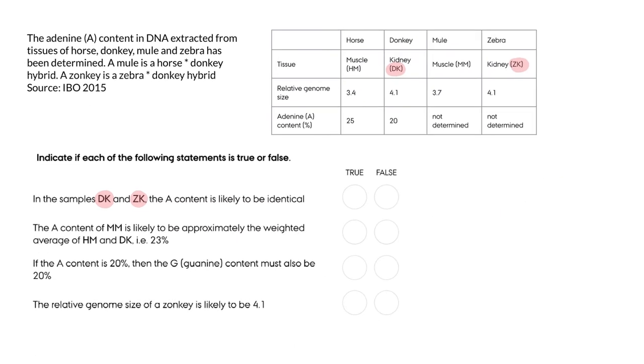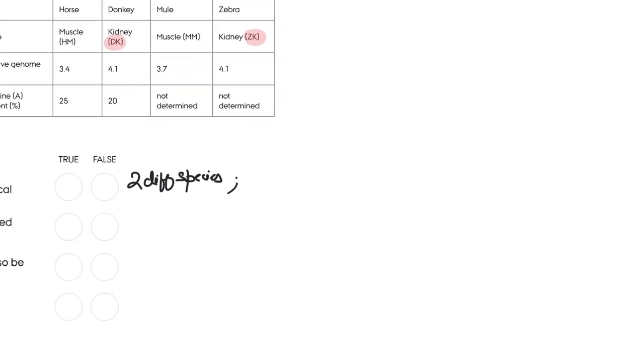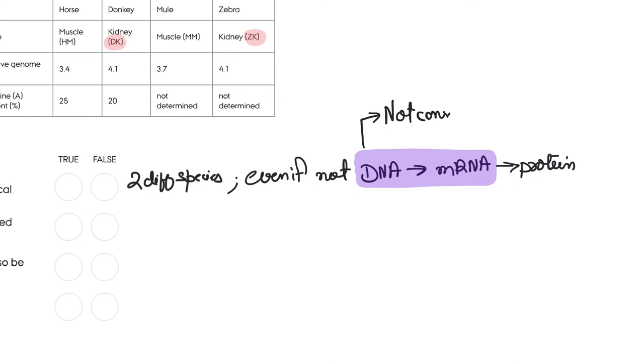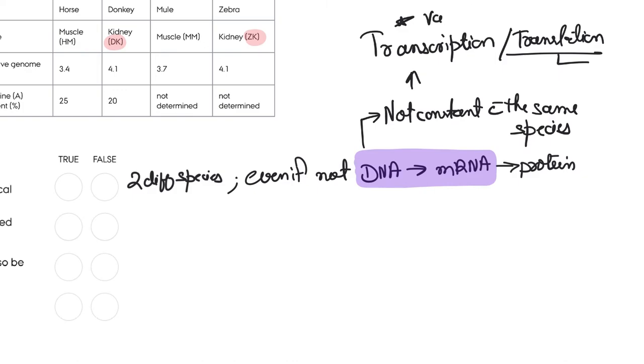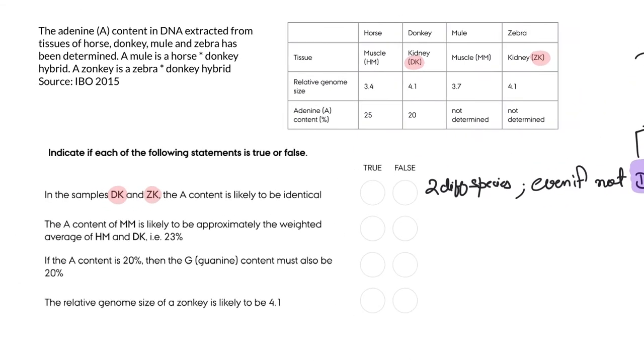Okay, so DK, ZK, HM—we have horses, donkeys, mules, and zebras. First question: in the samples DK and ZK, the A content is likely to be identical. Now you understand that AT/GC ratio is fixed for a species, but even in the same species the amount of DNA going to RNA changes in different tissues. And here we're talking about two different species, so definitely it's not going to be the same. The level of transcription of different genes is different, and because of that the level of A will be different. So it is a false statement.